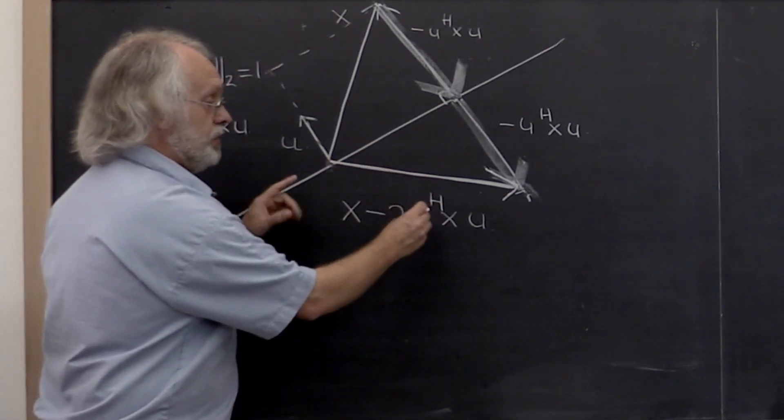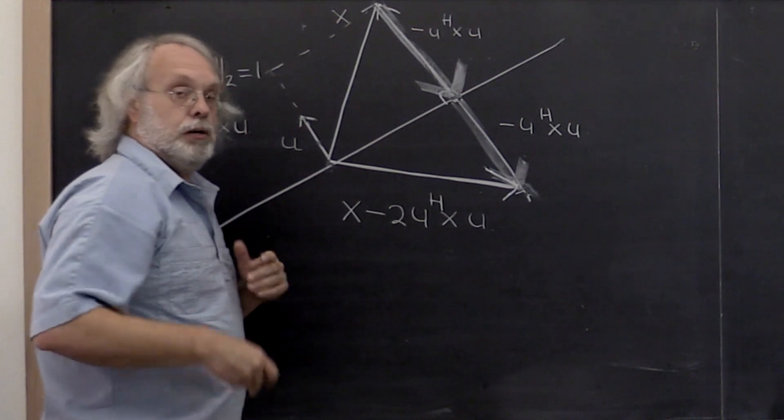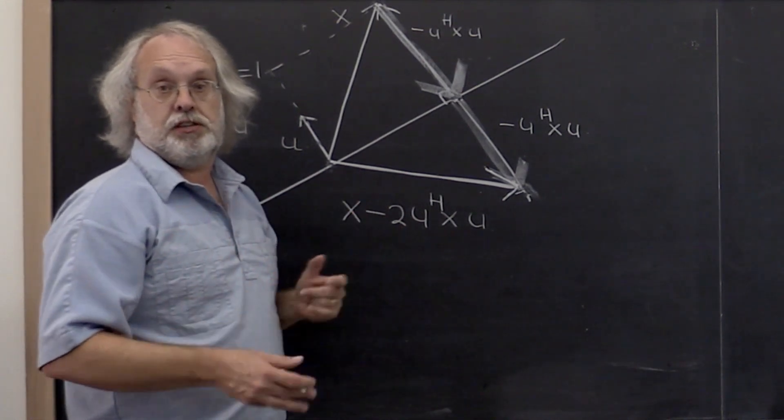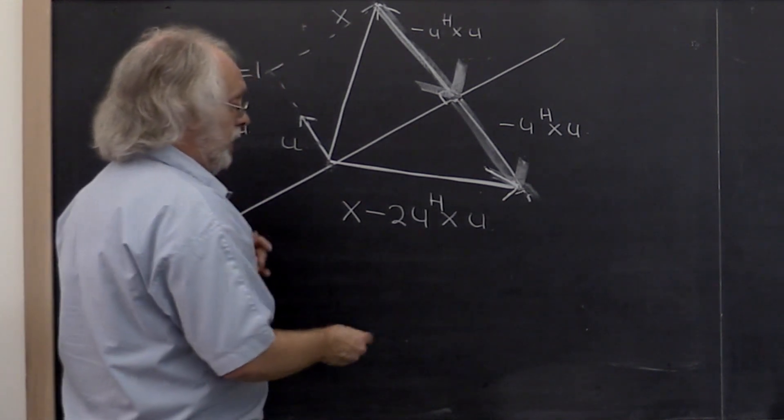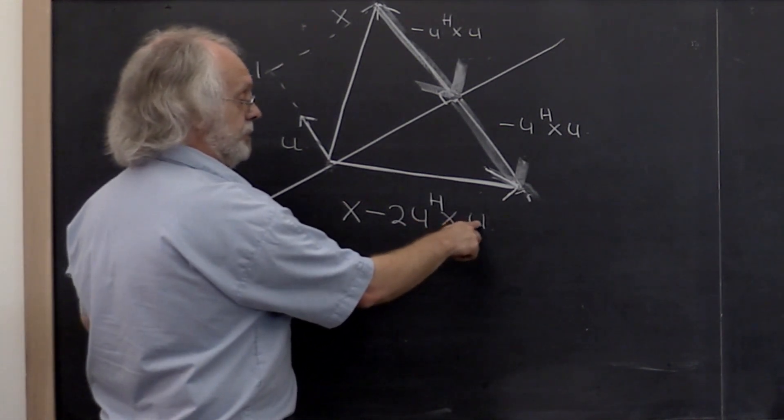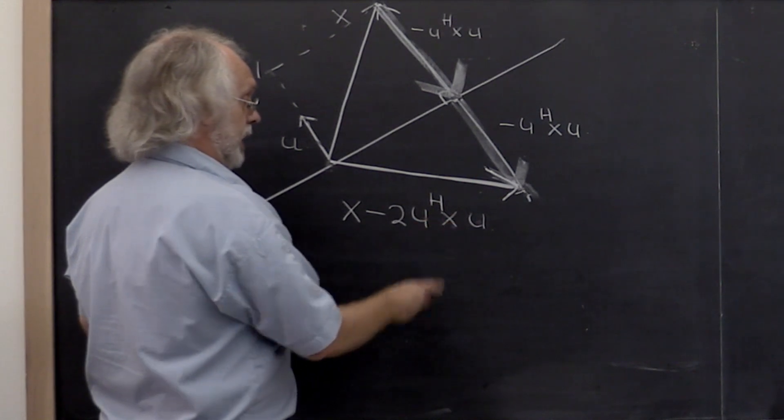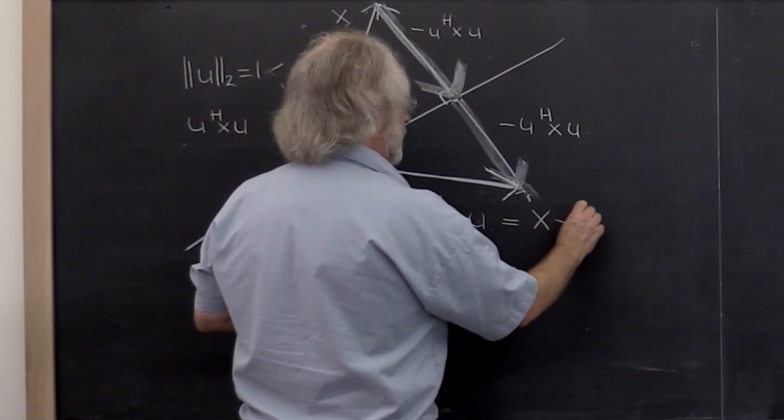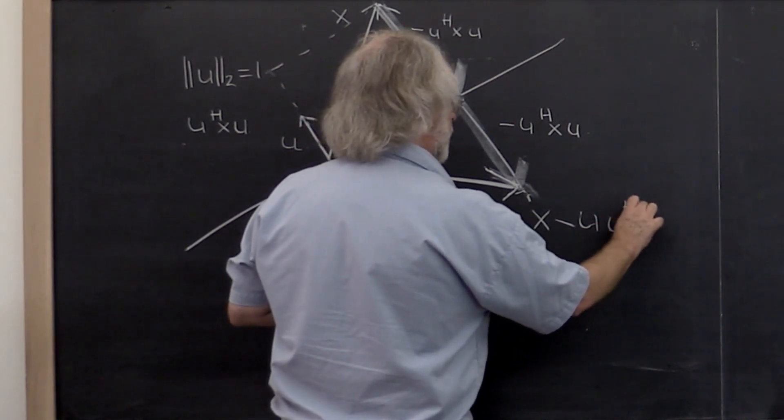That gives us an expression for this vector. But what we want is a matrix that captures that transformation. We know that a scalar times a vector is the same as a vector times a scalar. So this right here is the same as x minus 2 times u times u dot product with x.